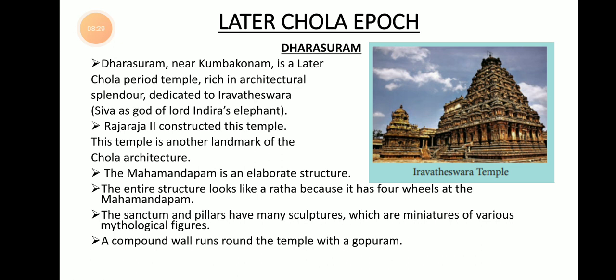There is a Maha Mandapam which is an elaborate structure, and the entire structure looks like a Radha — a wagon — because it had four wheels at the four corners of the Mandapam. The sanctums and the pillars have many sculptures which are miniatures of various mythological figures. These are small-sized copies of great gods and mythological figures carved in the sanctum and pillars of the temple. A large compound wall runs around the temple with a Gopuram.